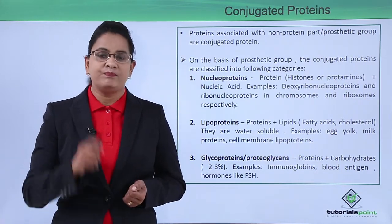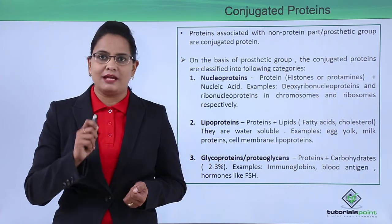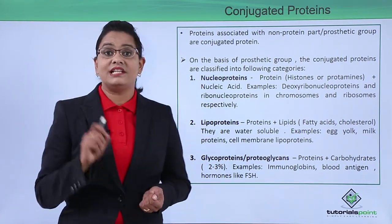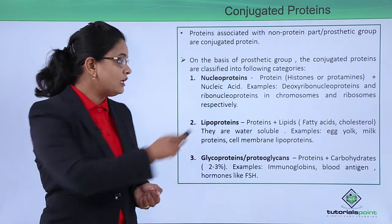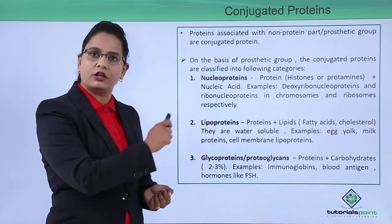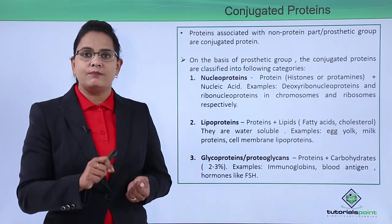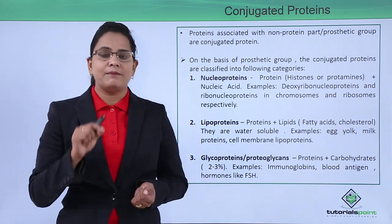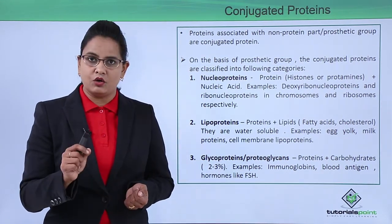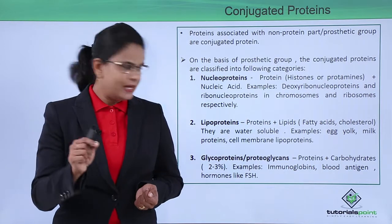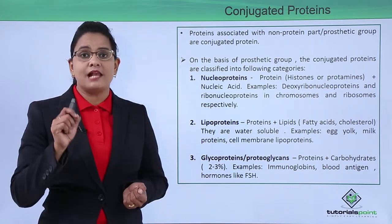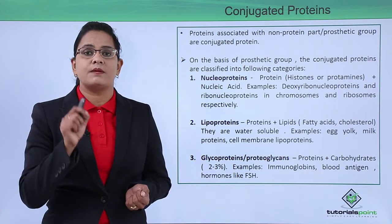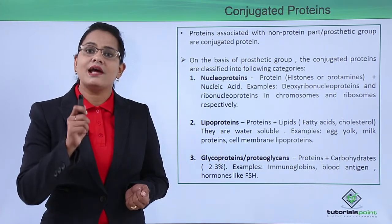The next category is lipoproteins. Lipoproteins are proteins associated with lipids. The lipids can be cholesterol or fatty acids. Lipoproteins are generally water soluble in nature. Examples of lipoproteins are egg yolk, milk proteins, and also the cell membrane proteins — the extracellular and intracellular proteins present on the membrane are lipoprotein in nature.